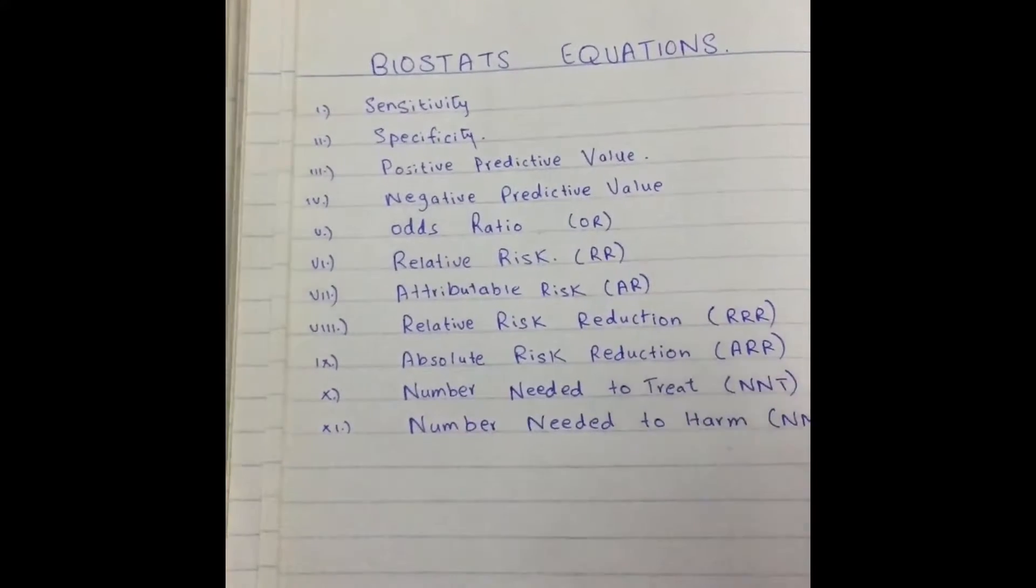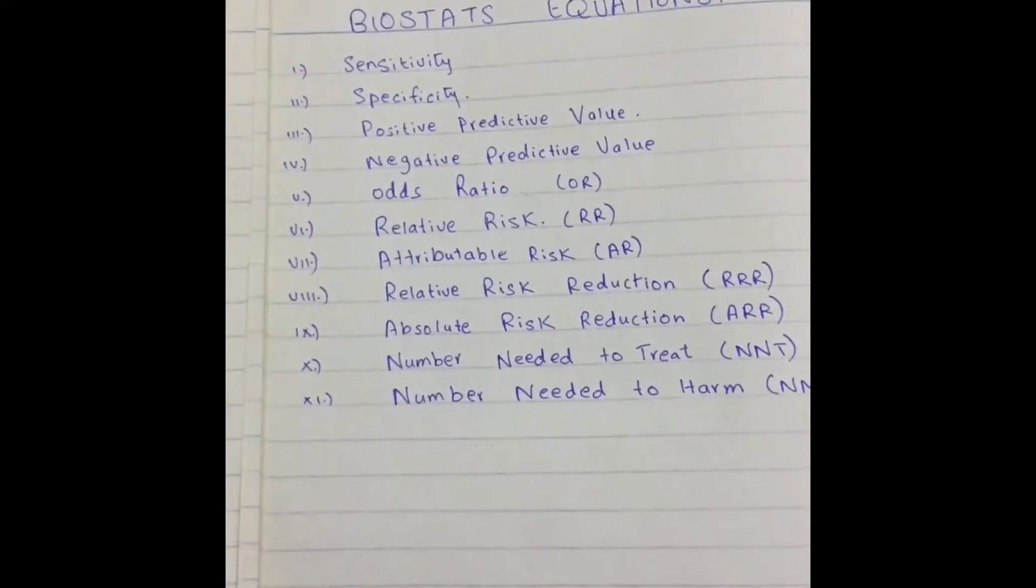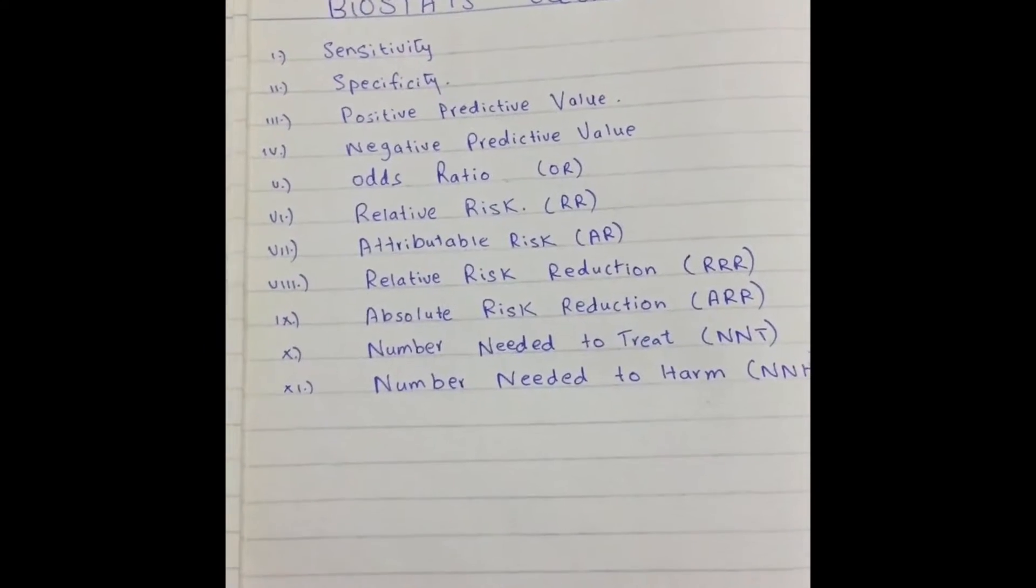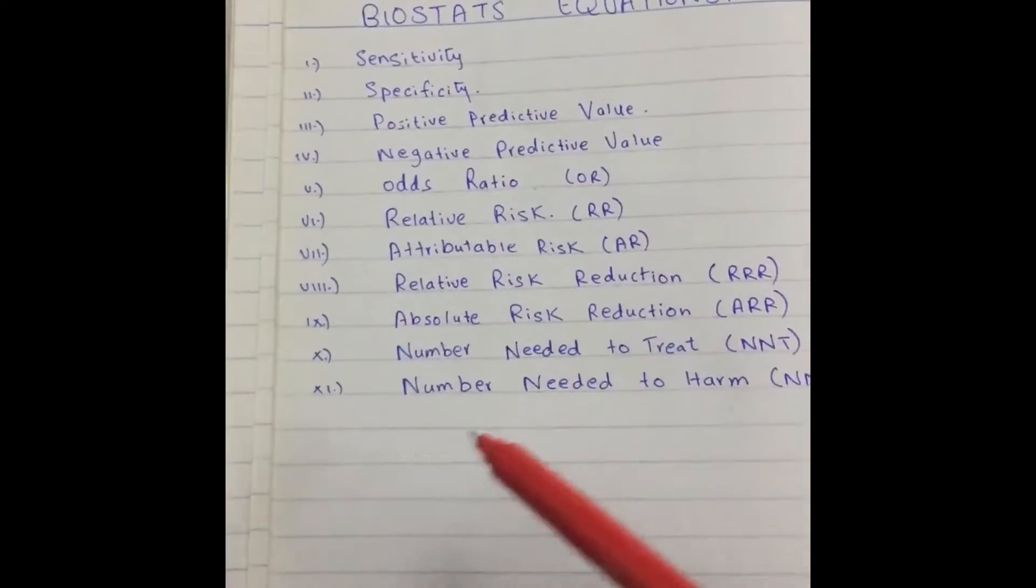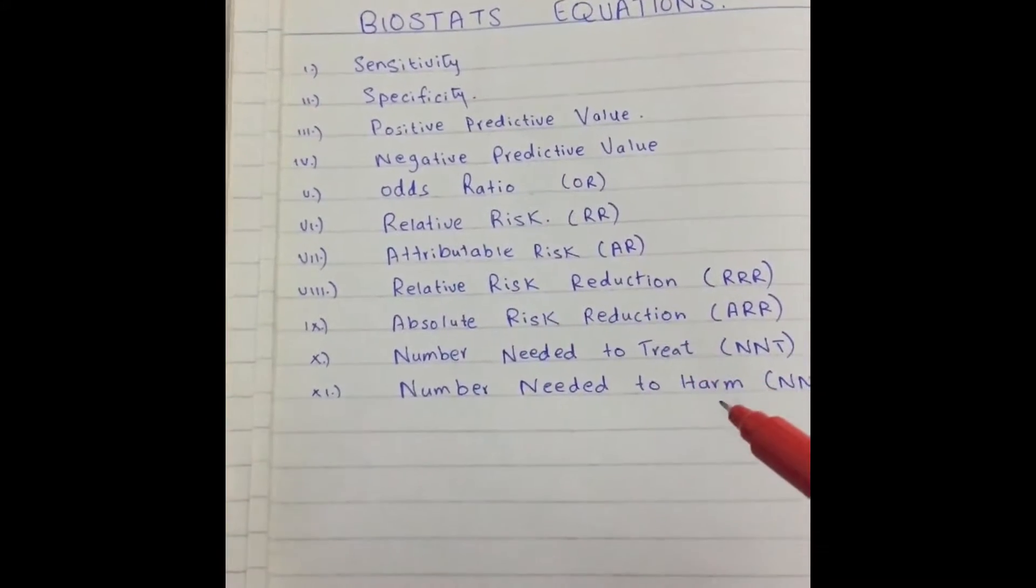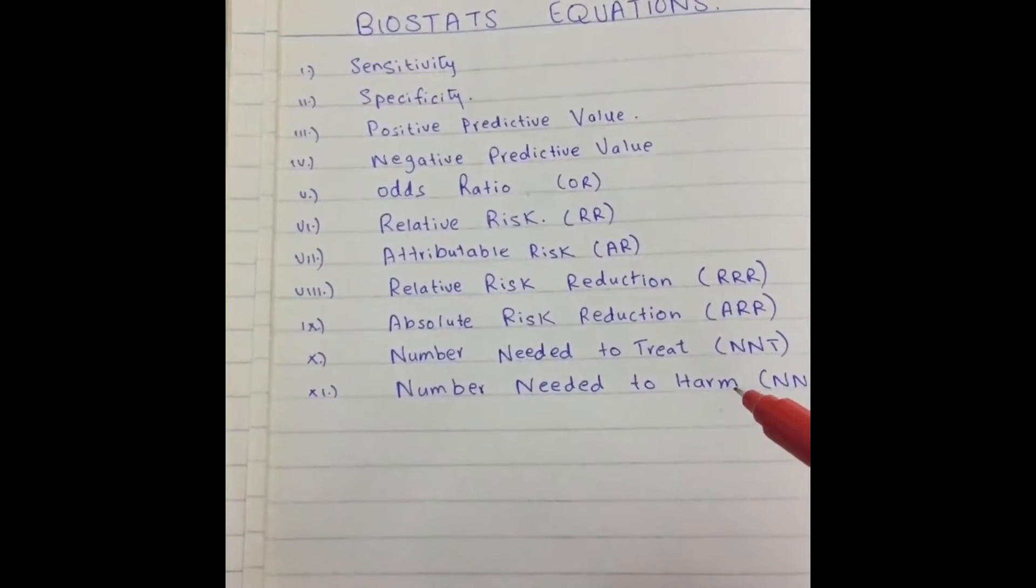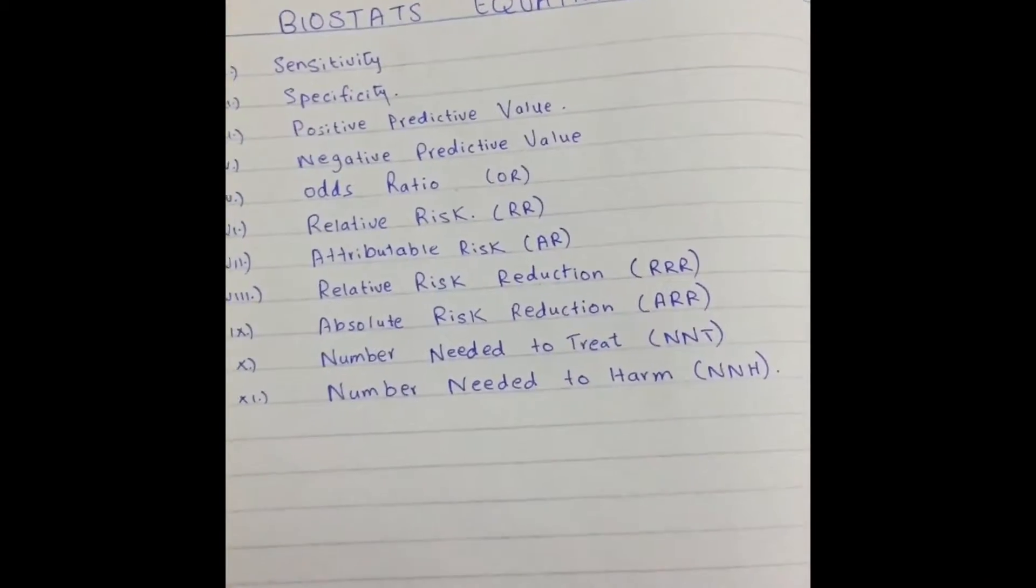Out of these 11, the first 4 are really simple, and all of us can somehow learn it. The real problem is in this area, from odds ratio down to number needed to harm, and we're going to understand these today. Let's try.